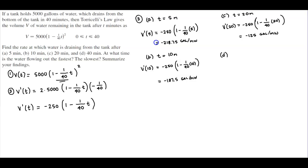In part D, we let T equal 40 minutes. V prime of 40 is equal to negative 250 times (1 minus 1/40 times 40), and from there we get 0 gallons per minute.